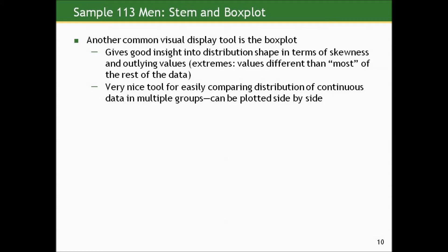Another common visual display tool is called the box plot. It gives good insight into the distribution in terms of skewness and what we'll call outlier values — things that are extreme, values that are different from most of the rest of the data. It's a very nice tool for easily comparing the distribution of continuous data across multiple groups.